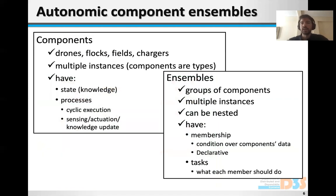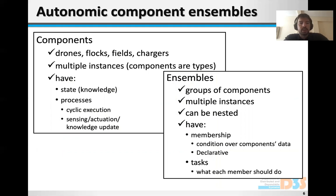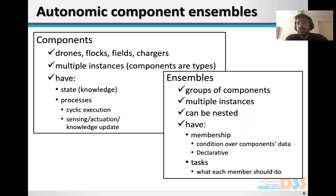Moving on, from the perspective of our approach, we have two main constructs: components and ensembles. Components in our running example are drones, flocks, fields, and chargers, and there can be multiple instances of components — so essentially many drones as we saw before — and each component has a state field.